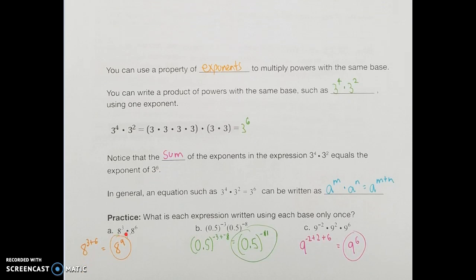For 8 to the 3rd times 8 to the 6th, we just add 3 plus 6 and get 8 to the 9th. Same thing with 0.5 to the negative 3rd times 0.5 to the negative 8th — as long as I'm still adding those two exponents, negative 3 plus negative 8 gives negative 11 as my power. So the base stays 0.5, and I add the two powers to get negative 11.